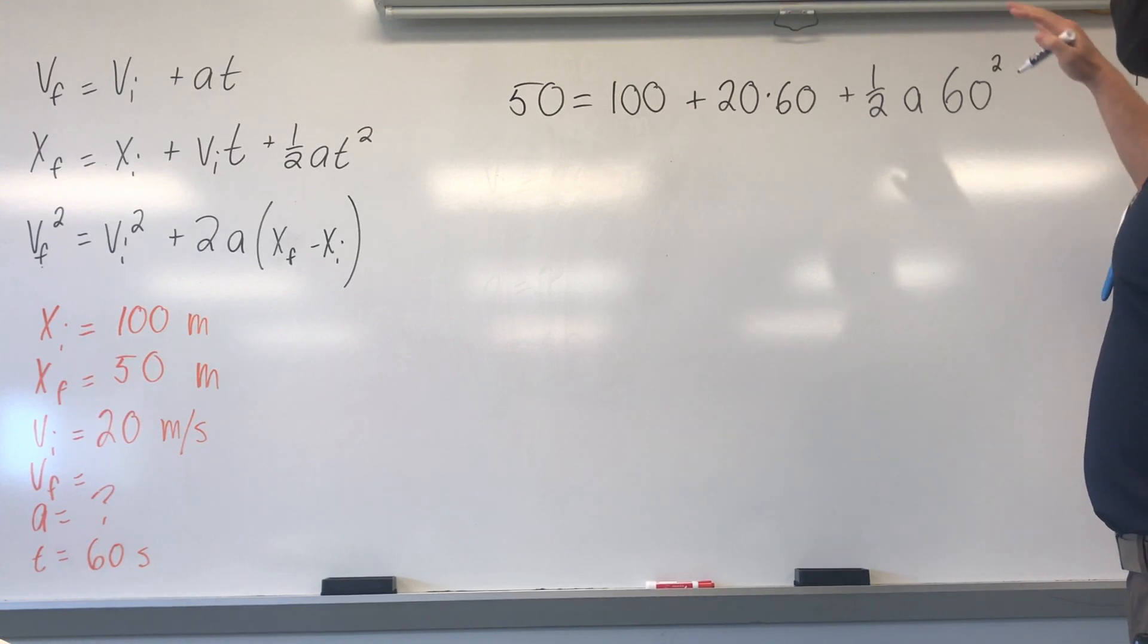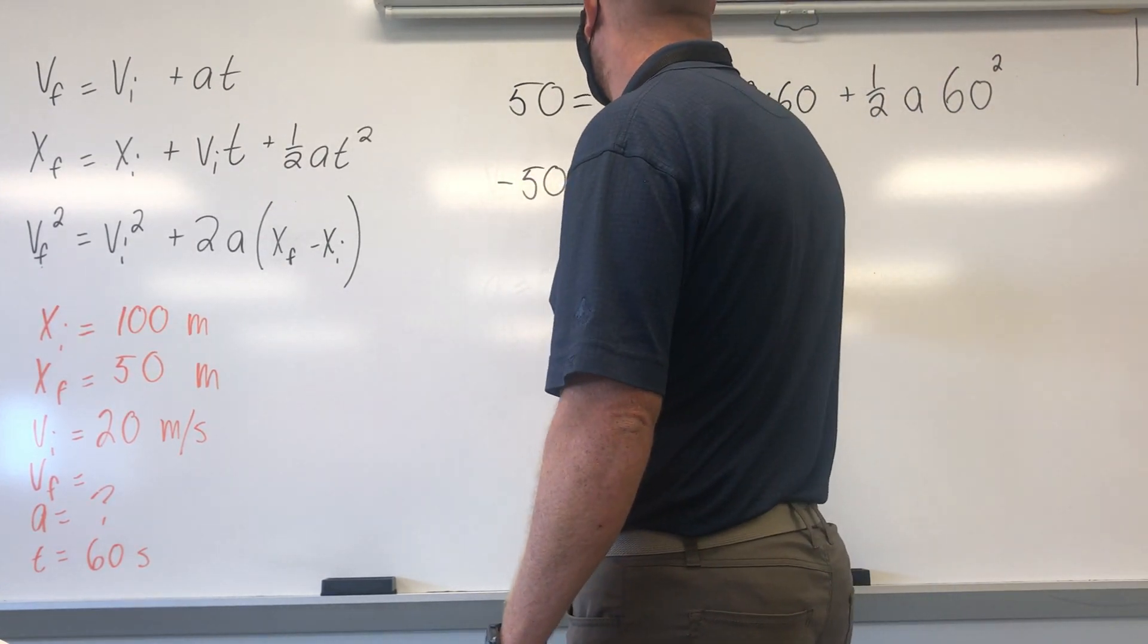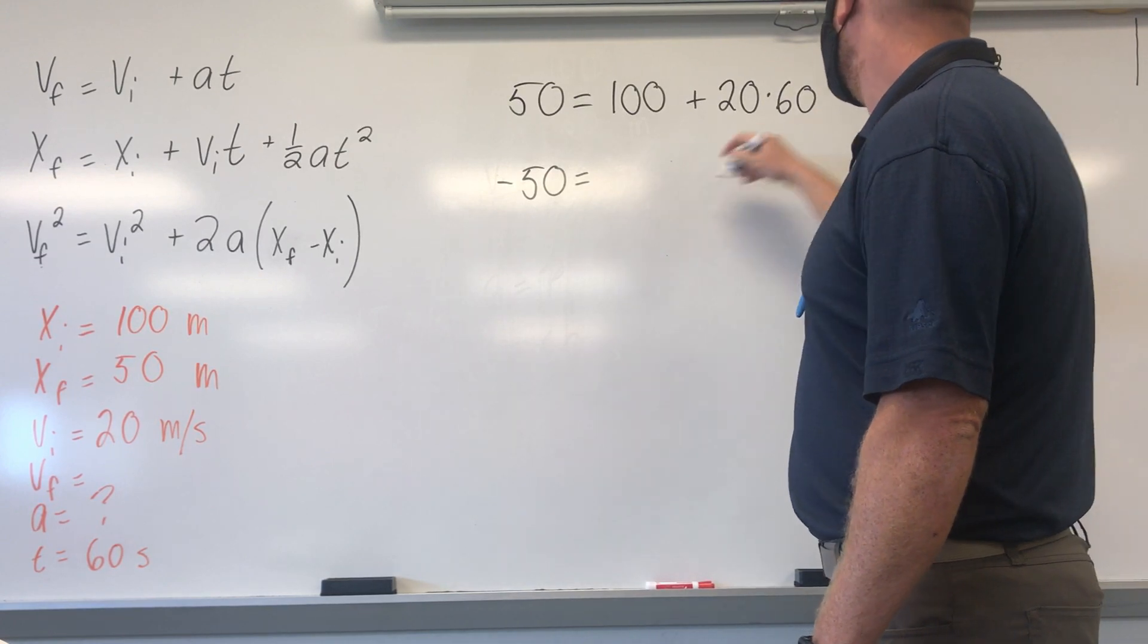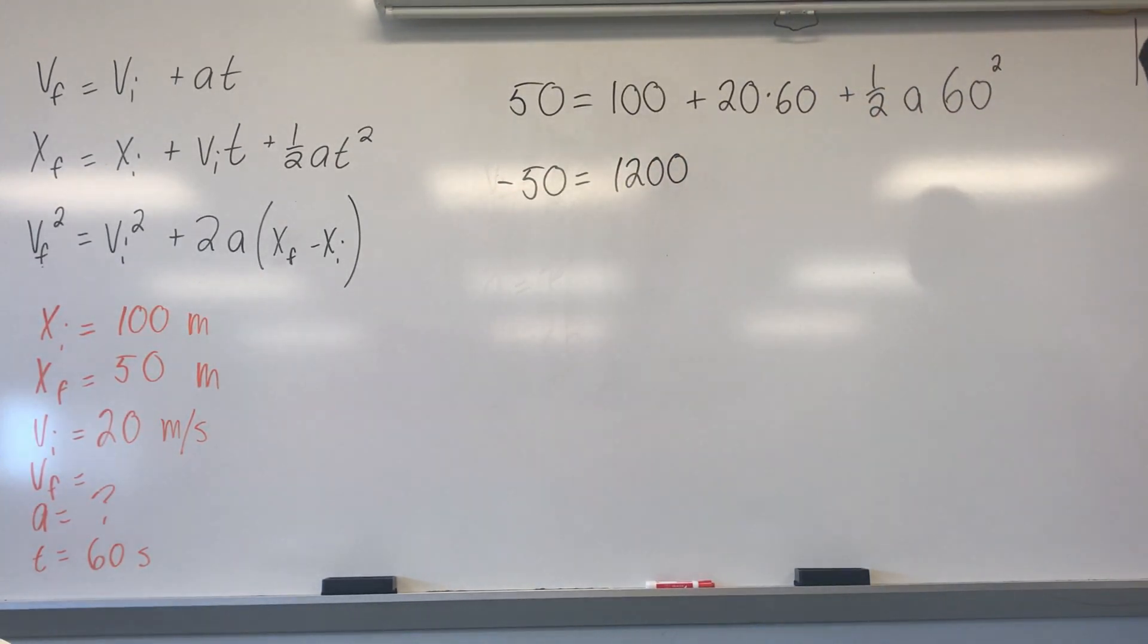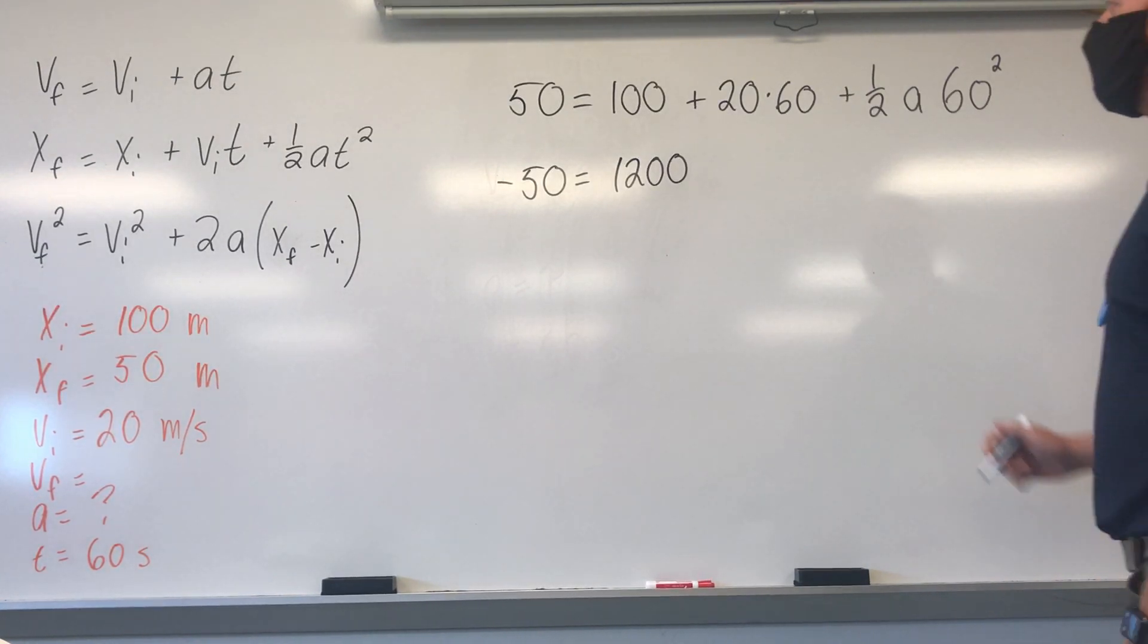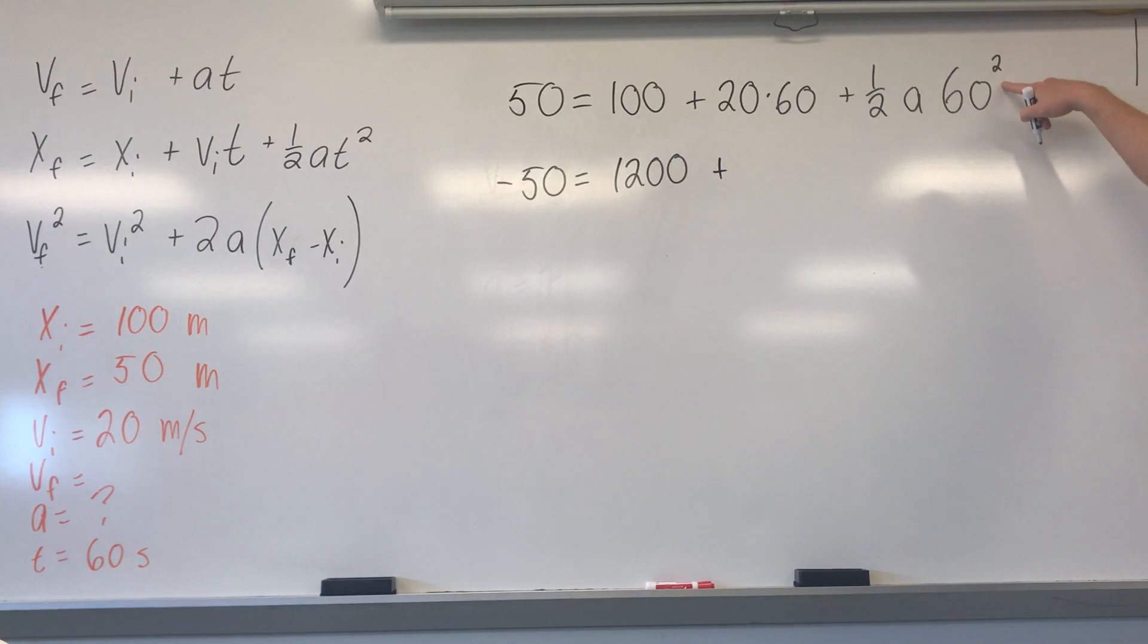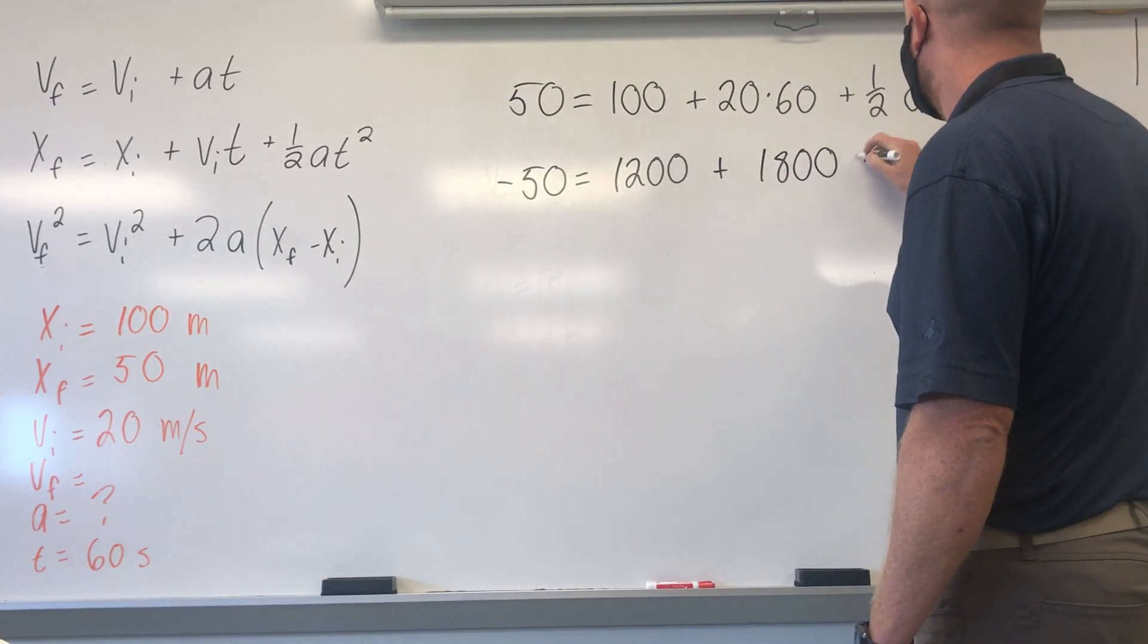All right, now let's solve. So, 50 minus 100 is negative 50 is equal to 20 times 60, that's 1,200. So, 1,200 plus half of 60 squared times A. 60 squared is 3,600. Half of that would be 1,800 A.